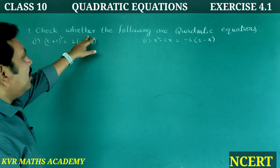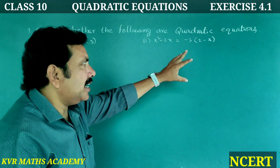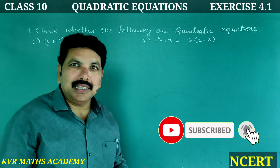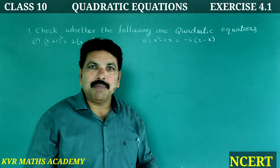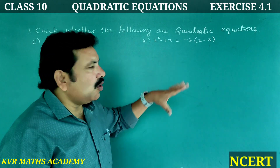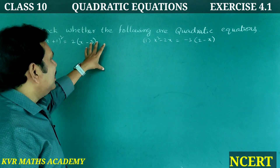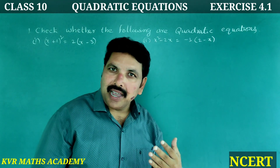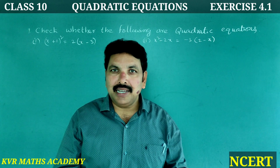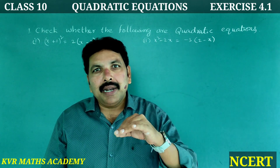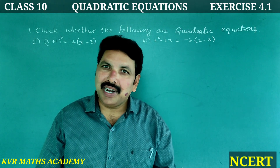This is the first sum: check whether the following are quadratic equations. In total, 8 problems are given. We will check them one by one. 4 problems will be explained in this video and 4 problems in the next video. The general form of the quadratic equation is ax² + bx + c = 0.